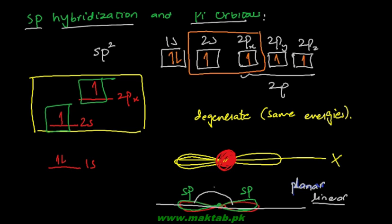When SP hybridization occurs, it gives a linear structure. The angle is definitely 180 degrees — if you take this as the center, the angle at the top and at the bottom is 180 degrees. Now when two carbon atoms come closer to each other having this structure, this is one sp orbital and this is another sp orbital. Similarly, you have another carbon atom placed close to this one.